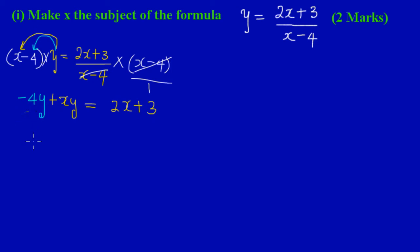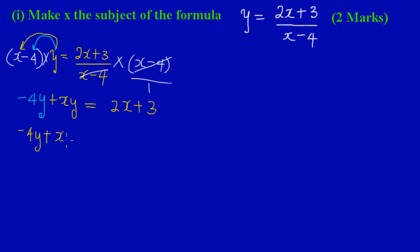Now, if you notice on either side of my equation I have terms in x — on the left side I have xy, and on the right side I have 2x. I need to group all my x's on the left-hand side. The 2x on the right-hand side is positive, so to bring it across I do the opposite of addition, which is subtraction — subtracting 2x from both sides gives a negative 2x on the left.